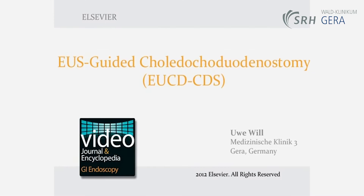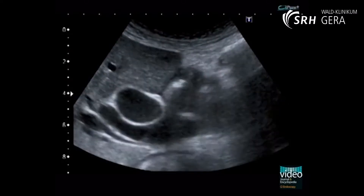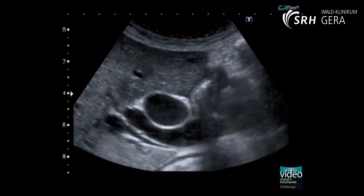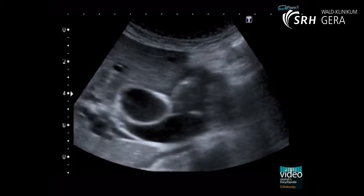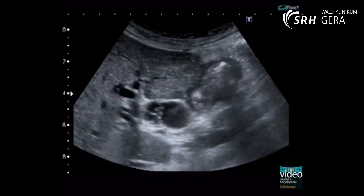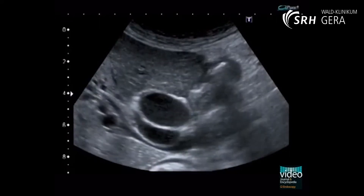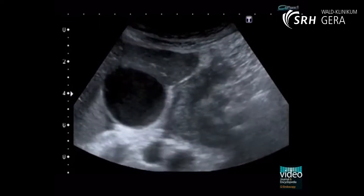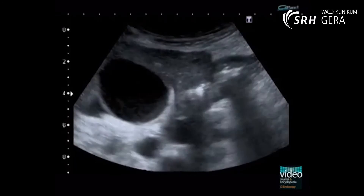Endoscopic ultrasound is considered an advanced technique of interventional endoscopy for internal drainage of bile in patients with malignant jaundice where endoscopic retrograde cholangiopancreatography is impossible to perform. In a patient with jaundice following palliative gastroenterostomy due to an irresectable tumour in the head of the pancreas with duodenal stenosis, transabdominal ultrasound reveals dilated intrahepatic branches of the biliary system and common bile duct.